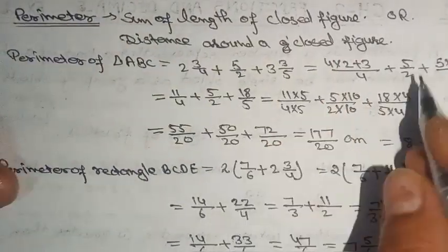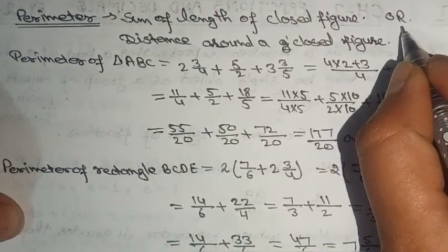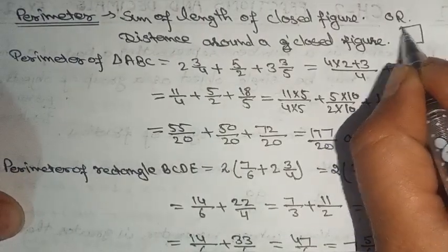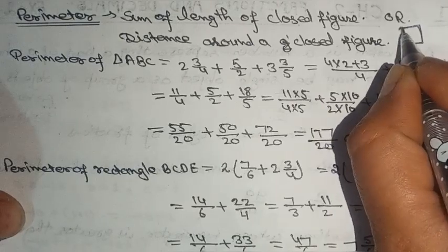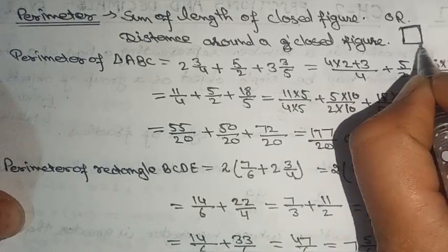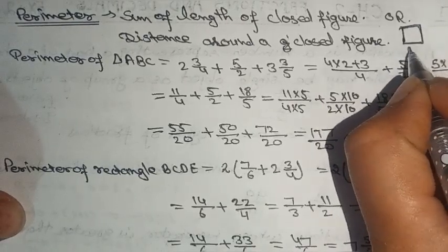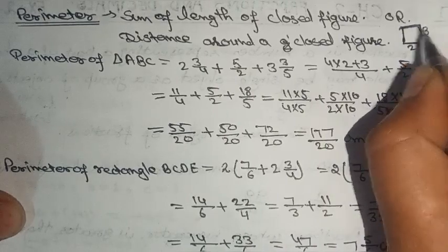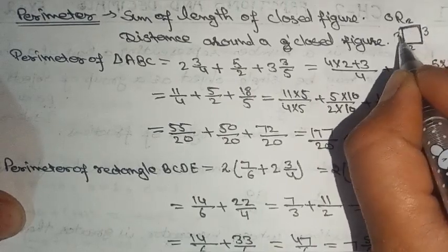Perimeter is the total distance around a closed figure. For example, if you have a shape like a rectangle with sides 2 cm, 3 cm, 2 cm, and 3 cm, the perimeter is the total boundary distance.